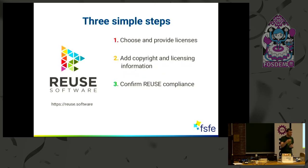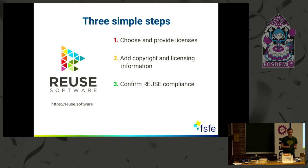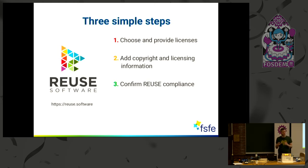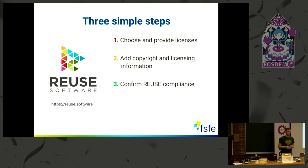The steps to reach this goal are quite simple — there are three. The first is choose and provide licenses: make a conscious decision about which license to choose and store the full license text inside your repo. The second is to add copyright and licensing information to every file — add a comment header to every source code file, or if that's not possible for binary files or other edge cases, we provide alternative solutions.